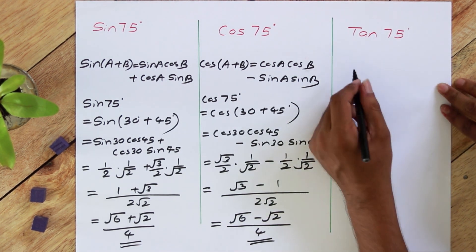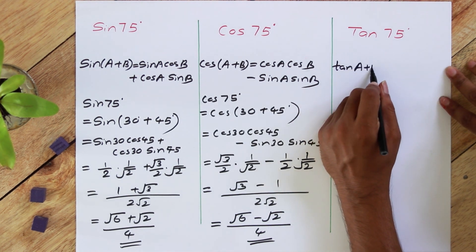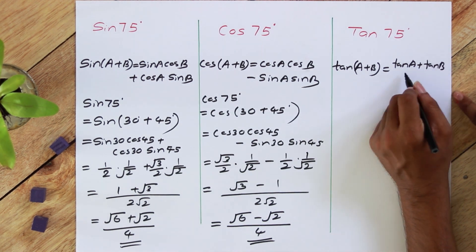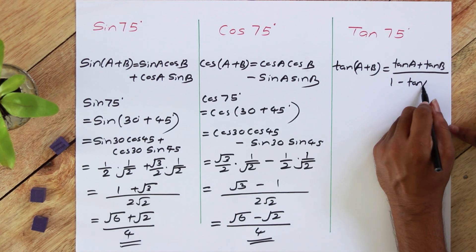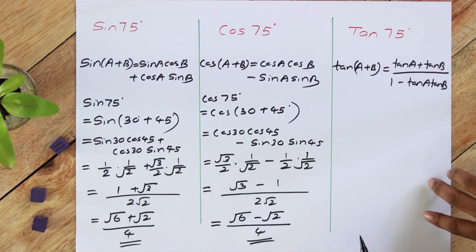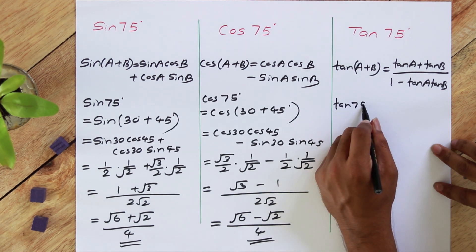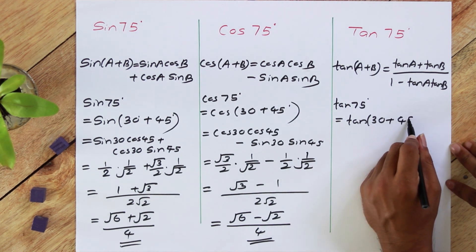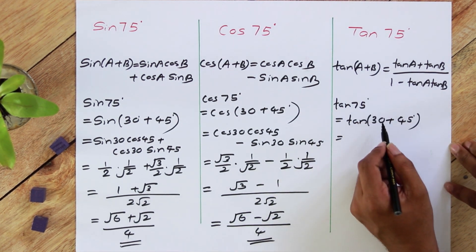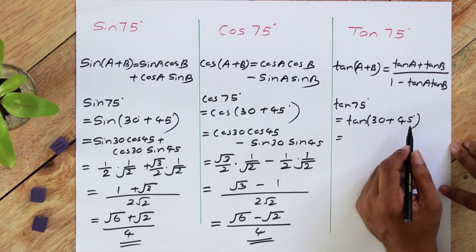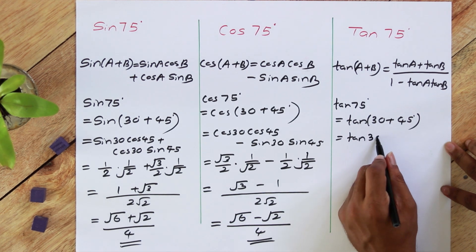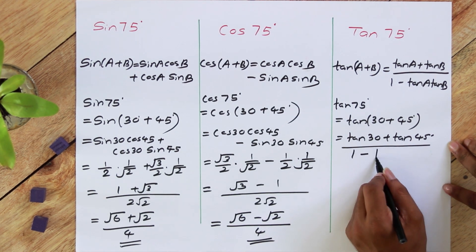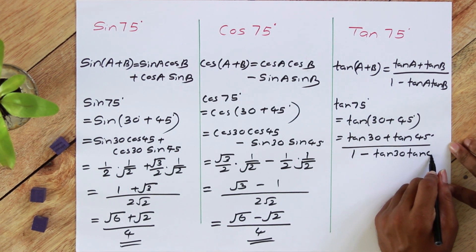Moving on to tan 75. We learned that tan(A+B) is tan A plus tan B over 1 minus tan A tan B. Now tan 75 we can write as tan(30 plus 45), which is in the form of A plus B, so we apply tan(A+B): tan 30 plus tan 45 over 1 minus tan 30 tan 45.